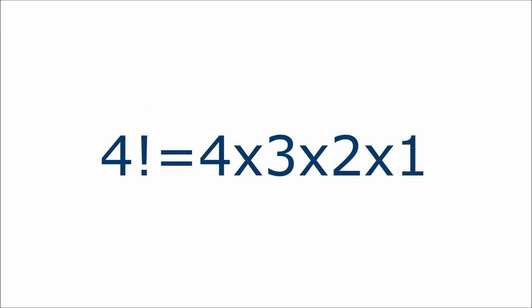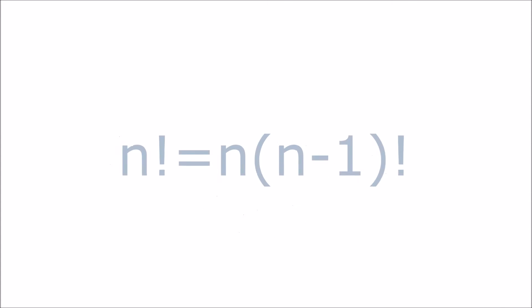The trick is to notice that 4 factorial, or 4 times 3 times 2 times 1, is actually equal to 4 times 3 factorial. In fact, in every case, n factorial is equal to n times n-1 factorial.